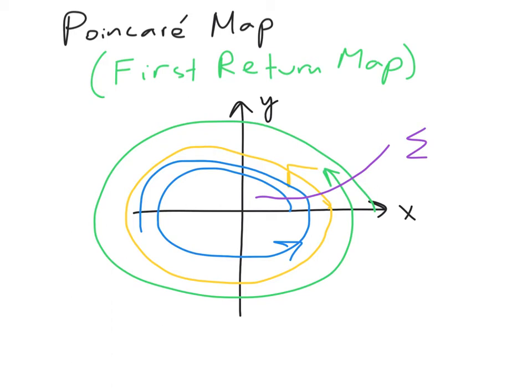A first-return map, or a Poincaré map - to find one, we start by defining a section that is transverse to the flow, meaning that the flow is not along the direction of the section. It's at least somewhat transverse to it. And I'm naming this section sigma.